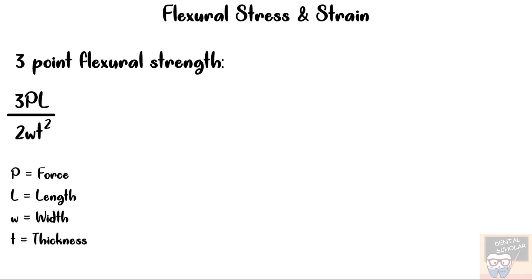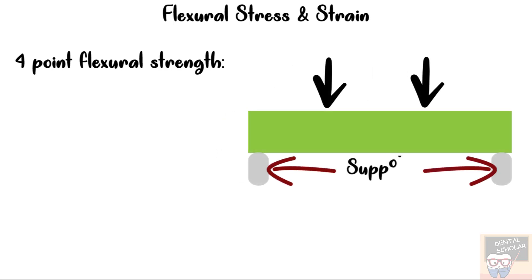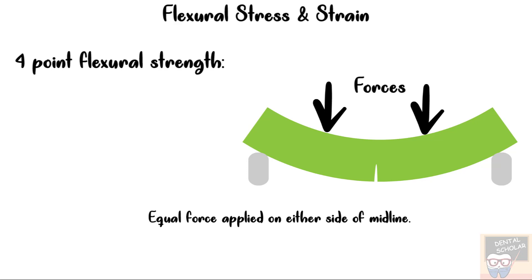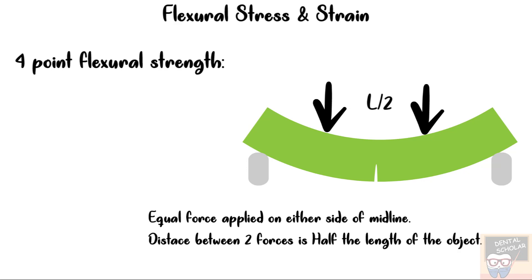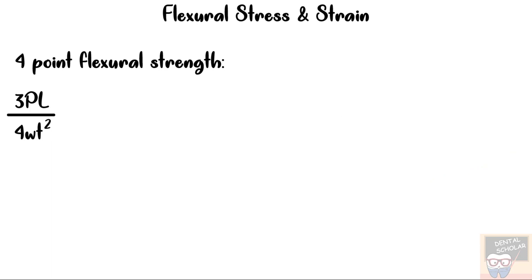A better approach is the four-point flexural strength test. Here the specimen is supported at both ends, and two equal forces are applied on either side of the center, each represented as P/2, with the total force written as P. The distance between the two forces is about half the length of the specimen. The formula is 3PL divided by 4WT², where P is the total force, L is the length, W is the width, and T is the thickness.